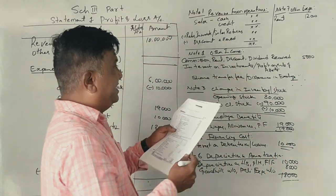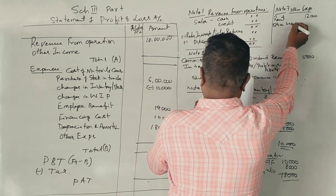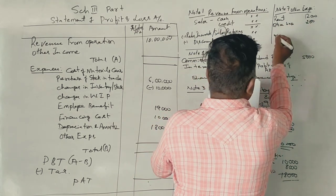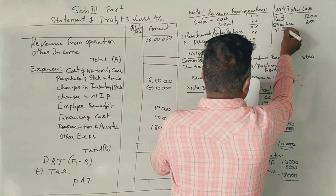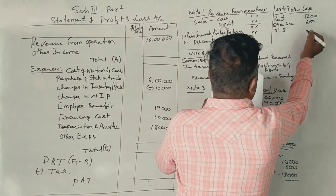Next, discount received from supplier, other income: commission, rent, discount received correct, this amount of 5,000. Next, office expenses, other expenses, 2,000. Printing and stationery, other expenses, 1,800.